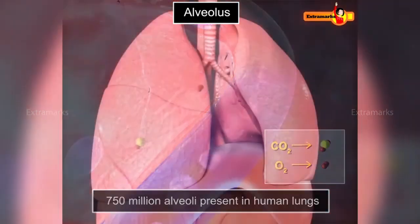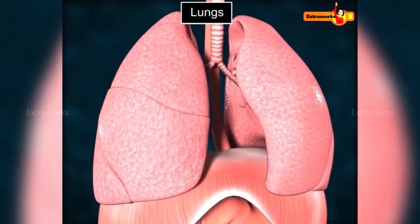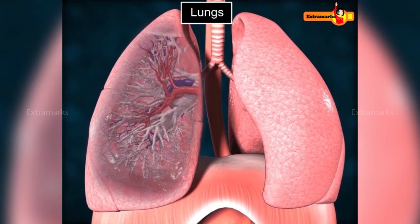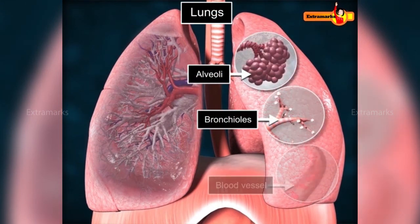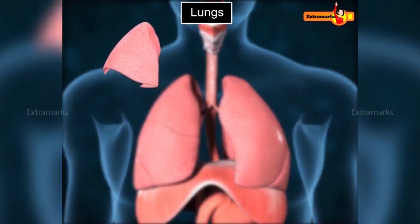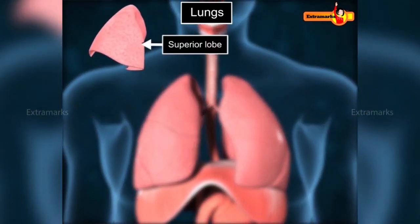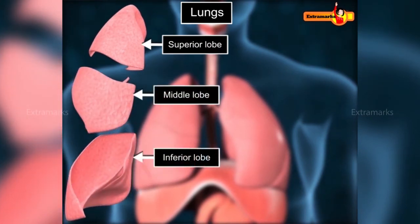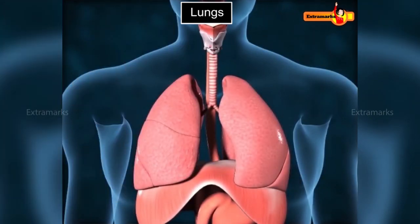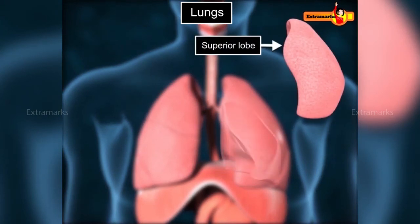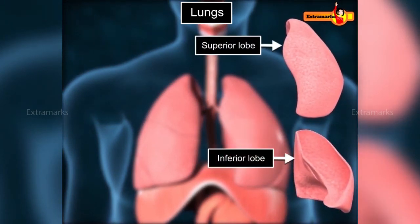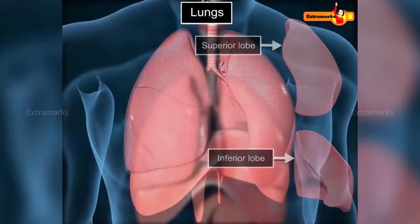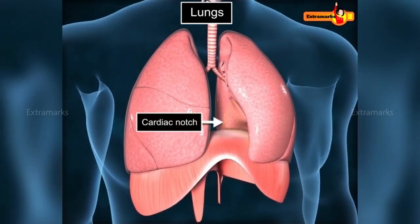The lungs are a pair of spongy, elastic, and roughly triangular organs consisting of alveoli, bronchioles, and blood vessels. The right lung has three lobes: the superior lobe, middle lobe, and inferior lobe, while the left lung has two lobes: the superior lobe and inferior lobe. The left lung is slightly smaller as it has a cardiac notch to accommodate the heart.